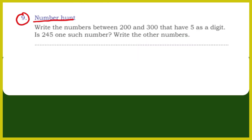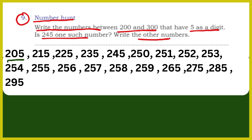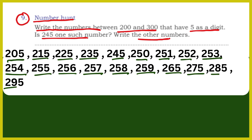Next is Number Hunt. Write the numbers between 200 and 300 that have 5 as a digit. We have to write all numbers between 200 and 300 in which 5 will come anywhere. Is 245 one such number? Yes, because it is bigger than 200 and smaller than 300 and it has 5. So after 200 the first number is 205, then 215, 225, 235, 245, then 250, 251, 252, 253, 254, 255, 256, 257, 258, 259, 265, 275, 285, 295.